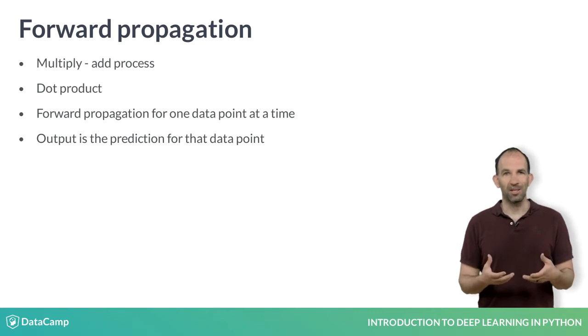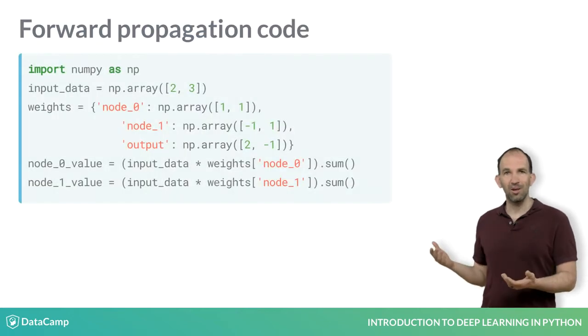This was forward propagation for a single data point. In general, we do forward propagation for one data point at a time. That value in the last layer is the model's prediction for that data point. Let's see the code for this.